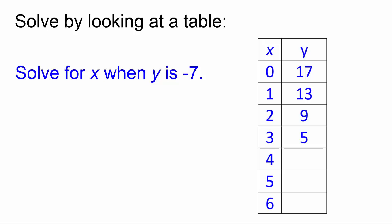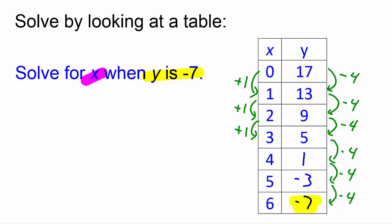We've solved by looking at a table. We'll use this table to solve for x when y is equal to negative 7. Let's first look for a pattern in the y column. We notice that as the x's go up by 1, the y's go down by 4. When y is negative 7, x equals 6.